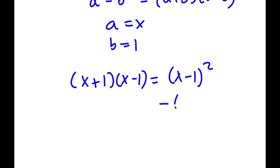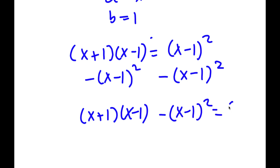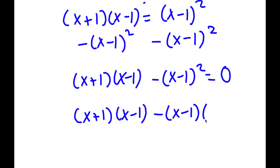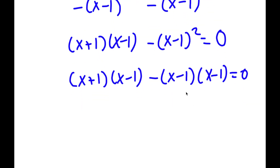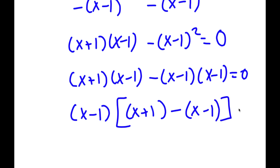Now, if I subtract x minus 1 squared from both sides, I get x plus 1 times x minus 1 minus x minus 1 squared is equal to 0. Now, x minus 1 squared is the same as x minus 1 times x minus 1. If I factor out x minus 1, I get x minus 1 times the quantity x plus 1 minus x minus 1, which equals 0.